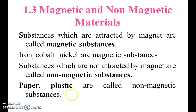Magnetic and non-magnetic materials. Substances which are attracted by a magnet are called magnetic substances. Iron, cobalt, and nickel are magnetic substances. Substances which are not attracted by a magnet are called non-magnetic substances. Paper and plastic are non-magnetic substances.